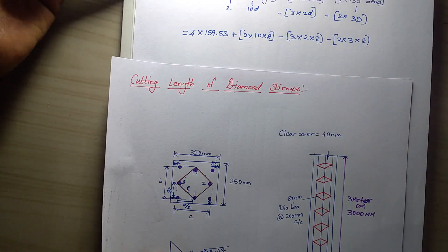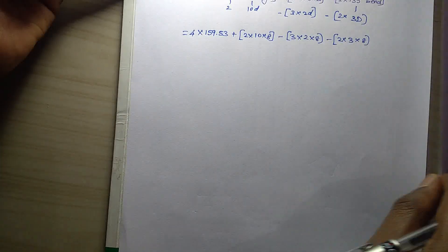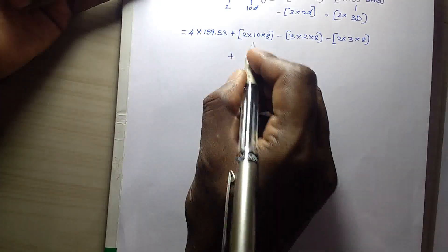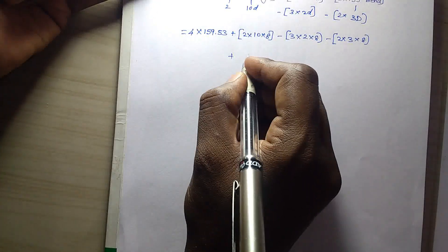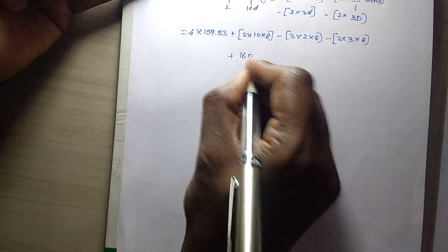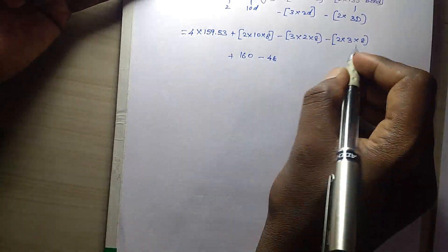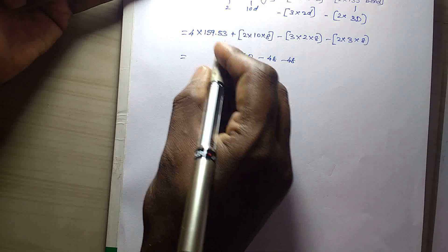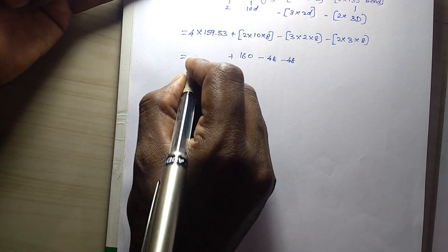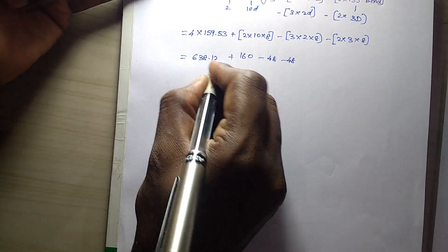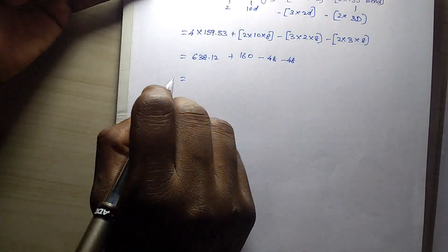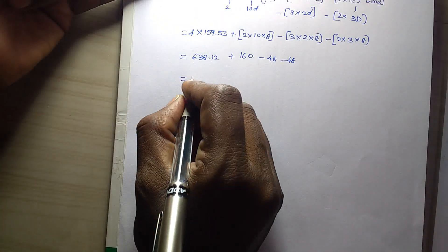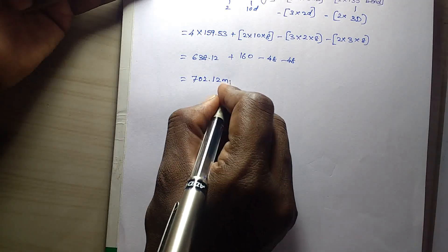So this is the calculated pattern and we can get the answer. So 2 into 10 into 8 = 20 into 8 = 160. Minus 48, minus 48. This is the calculated pattern — 638.12. So total length is 702.12mm.